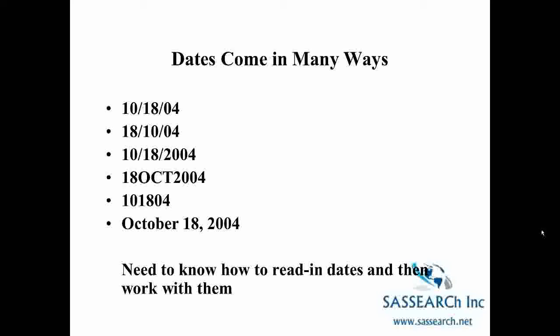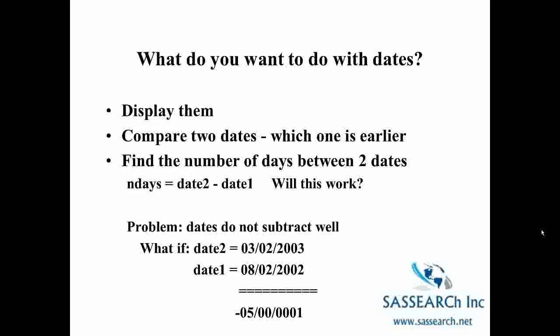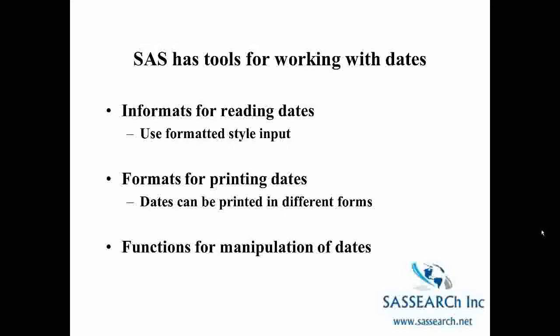How do we work with dates in SAS? The question is what do we want to do with the dates. Do we want to display them? Do we want to compare two dates — which one is earlier? Do we want to find the number of days or years that elapsed between two dates? The problem is that dates do not subtract very well. For example, if you have a date of March 2, 2003 and you want to subtract August 2, 2002, you can't just subtract the dates as shown in this example. So SAS has special tools for working with dates.